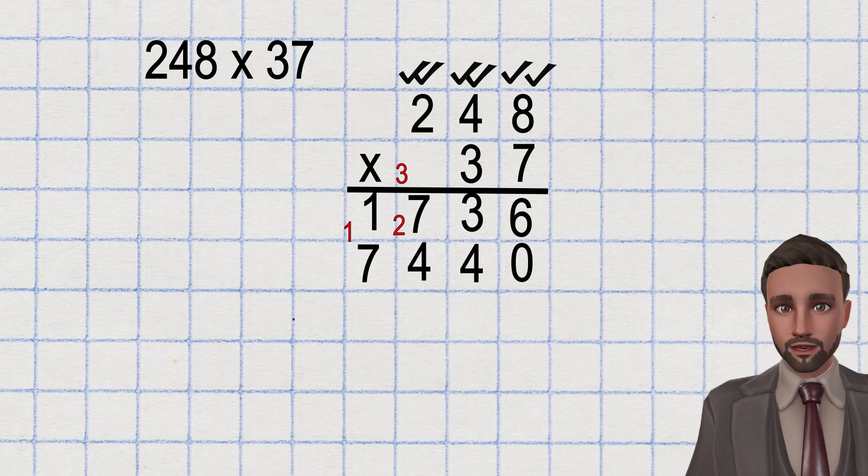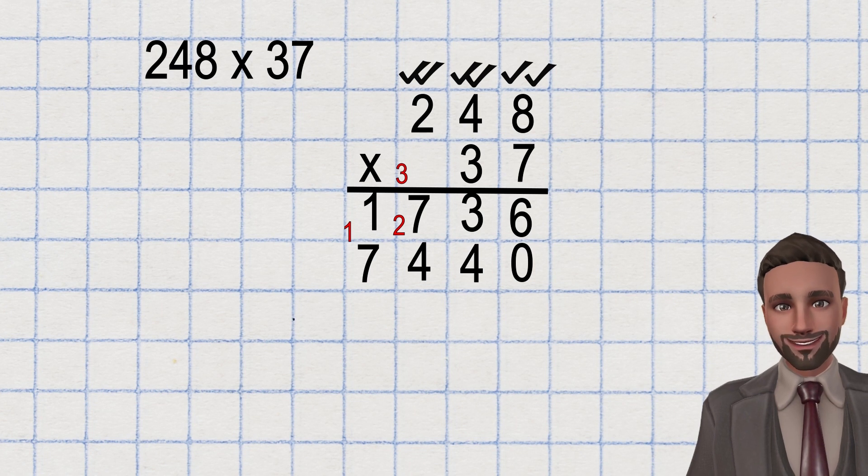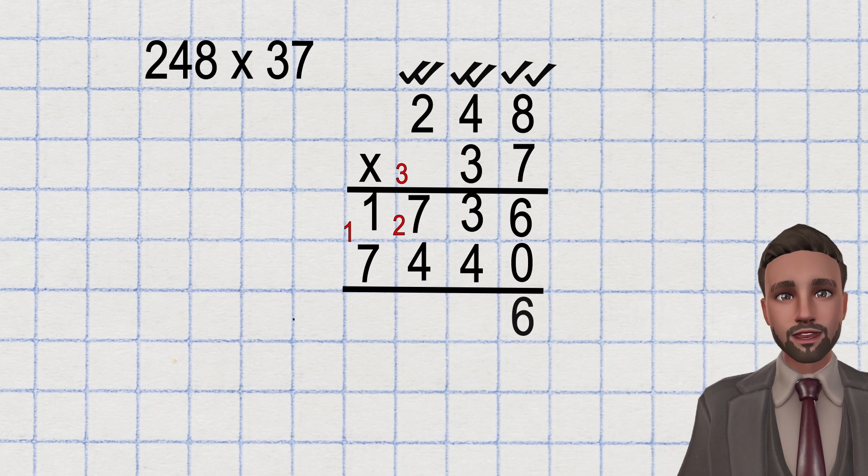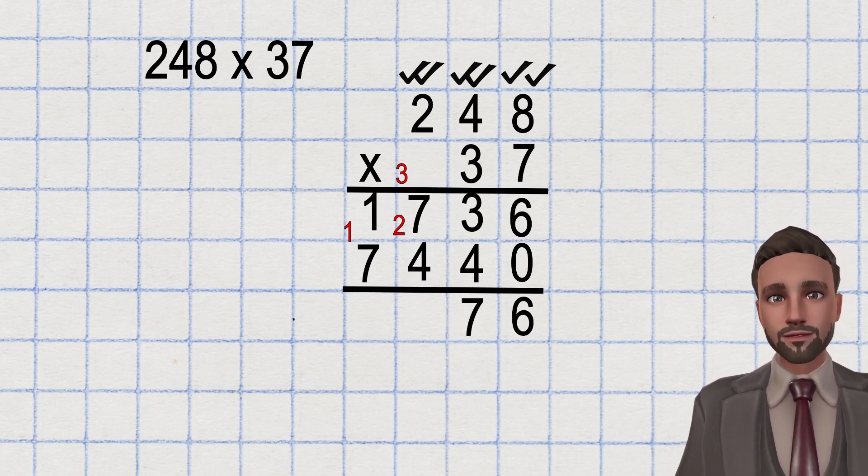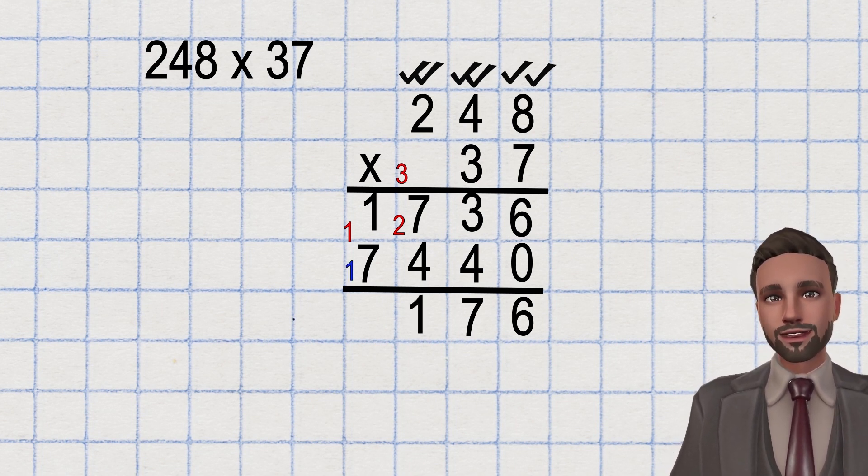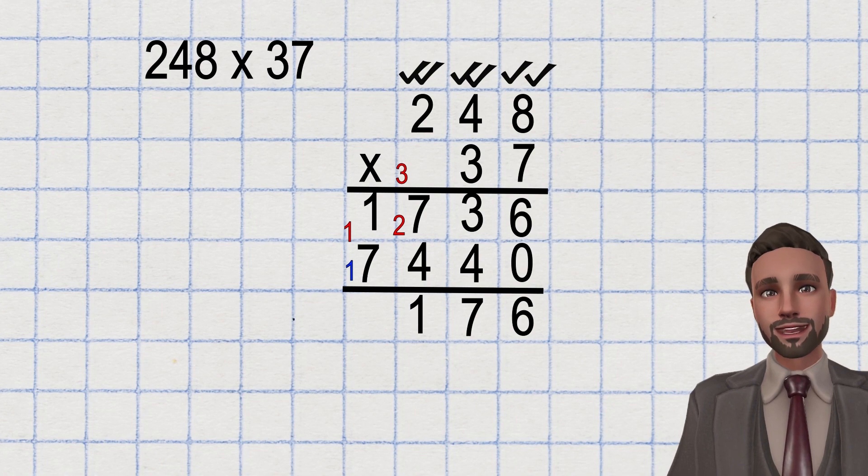Hopefully everybody at home is realizing that they forgot to add both products. Remember not to add anything that is in red that has been carried over during the multiplication. So let's get started. 6 add 0, 6. 3 add 4, 7. 7 add 4, 11. One down, carry the 1. 1 add 7 add 1, 9.